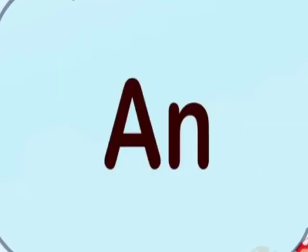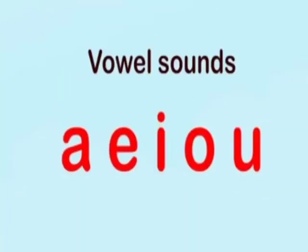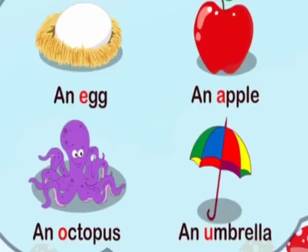We use AN if the naming words begin with a vowel sound, like A, E, I, O, U. For example: an egg, an apple, an octopus, an umbrella. The naming words egg, apple, octopus, umbrella begin with vowels. That's why we used AN.